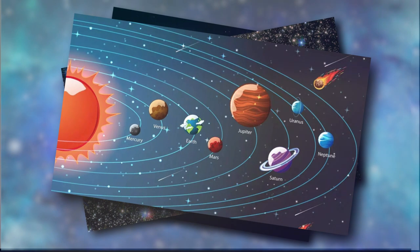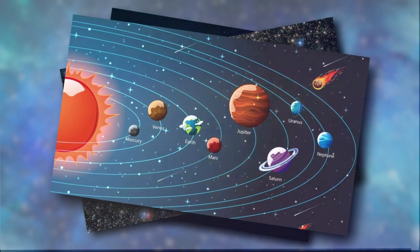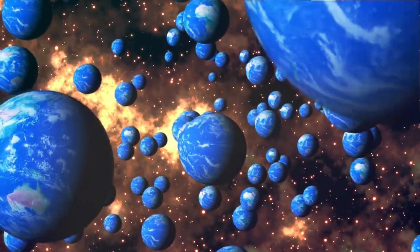In some universes, there might be so much dark energy that galaxies, stars, and planets can't form due to super-rapid expansion. In others, there might be too little, causing the universe to collapse in on itself.